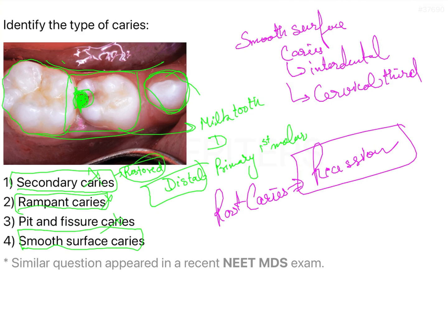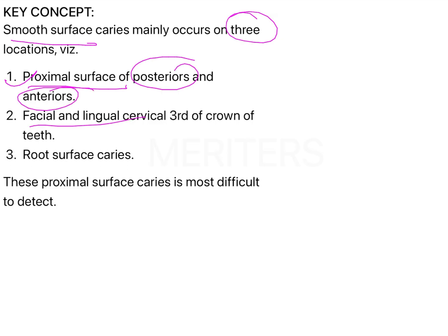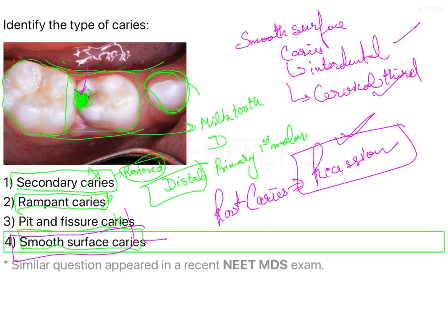So these are the five types of caries. This is a straightforward question — the proximal caries seen here are smooth surface caries. The smooth surface locations are: proximal surfaces of posteriors and anteriors, facial and lingual surfaces at the cervical third of the crown, and root surface caries seen in older patients with recession. The answer to this question is option four — smooth surface caries — as depicted in this particular picture.